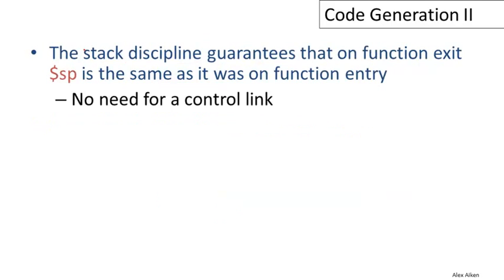The stack machine discipline guarantees that the stack pointer is preserved across function calls. So the stack pointer will be exactly the same when we exit from a function call as it was when we entered it. This means we won't need a control link in our activation record. The point of a control link is to help us find the previous activation, and since the stack pointer is preserved, we'll have no trouble finding it. We will never need to look at another activation during a function call since there are no non-local variables in the language.